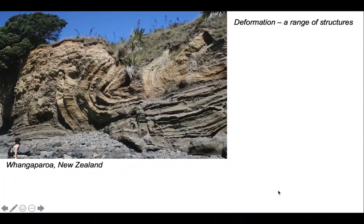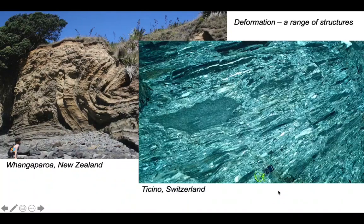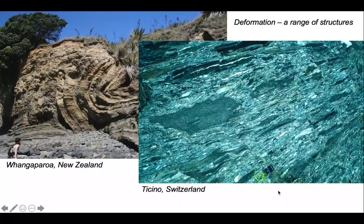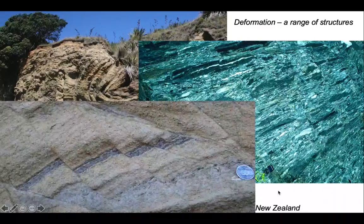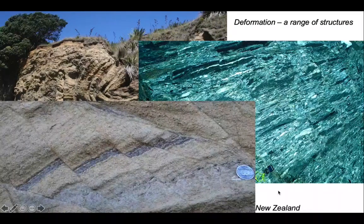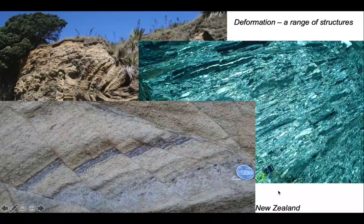Here are some sandstones in Fangaparoa in New Zealand, and they're folded. Here are some breaches from the Swiss Alps, and they're strongly elongated, they look streaked out. And here we are back in New Zealand, this silty layer in sandstones is offset, it's faulted.